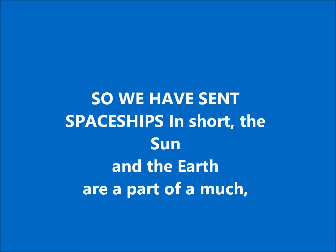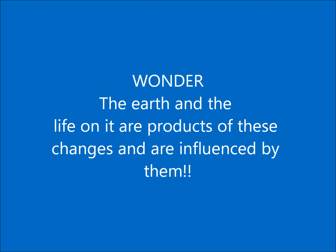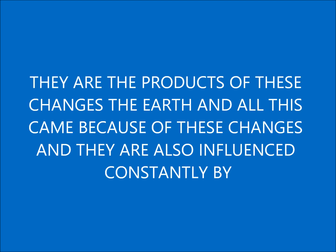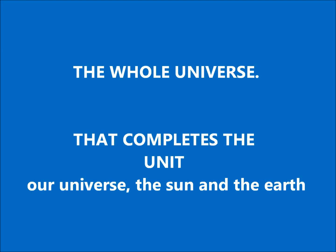In short, the sun and the earth are part of a much larger universe which is constantly moving and changing. The earth and life on it are products of these changes and are also constantly influenced by them. Before we try to understand the earth, we should understand where we are in the whole universe. That completes the unit 'Our Universe: The Sun and the Earth.'